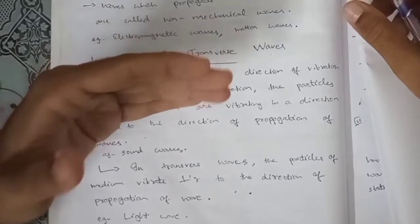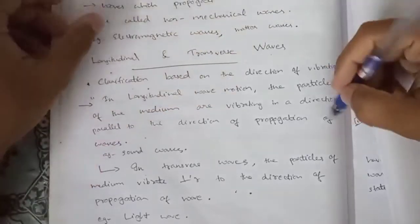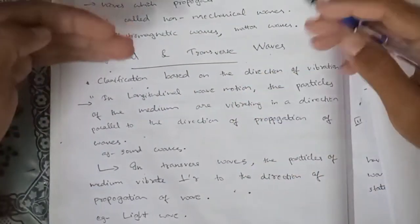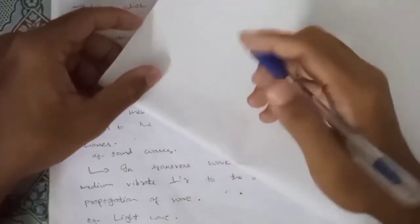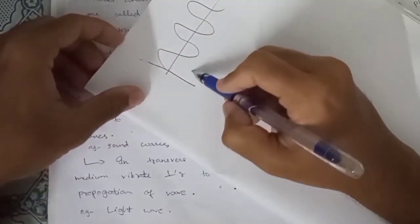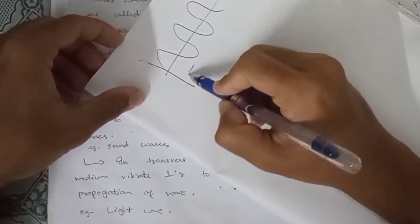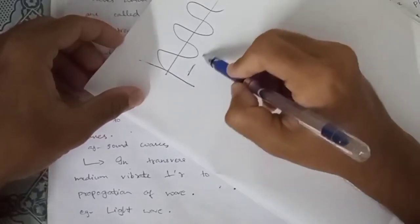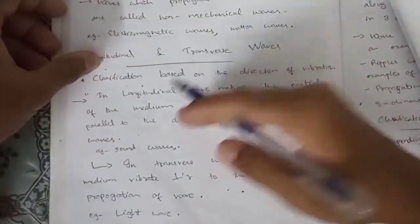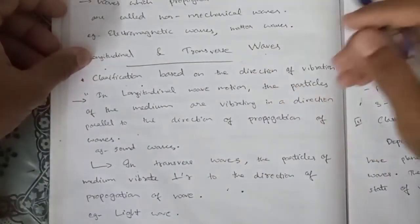Longitudinal waves are waves where the particles of the medium vibrate in a direction parallel to the direction of propagation of the wave. An example of a longitudinal wave is sound waves.